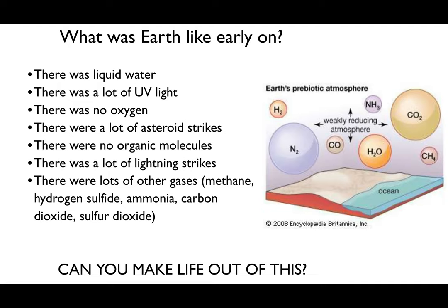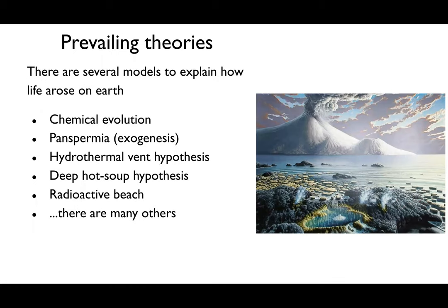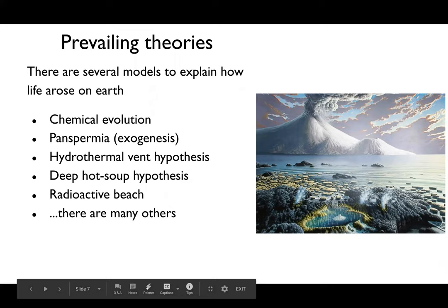The question you can ask is: can you make life out of this? The answer is yes, and how we get there is what's important. There are several prevailing theories, including the chemical theory of evolution, panspermia—where life was seeded on this planet from another planet or outside our solar system—the hydrothermal vent hypothesis, the deep hot soup hypothesis, the radioactive beach hypothesis, and many others.